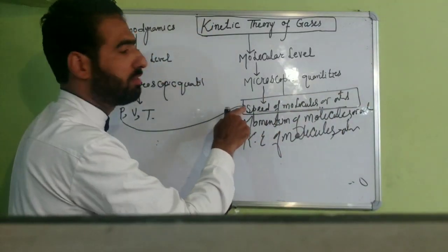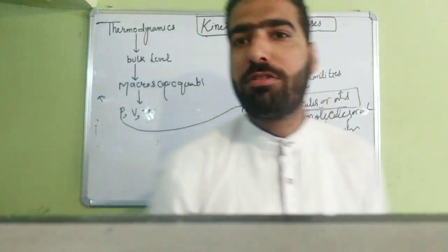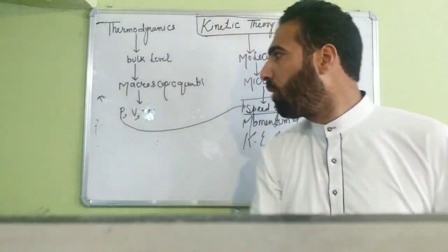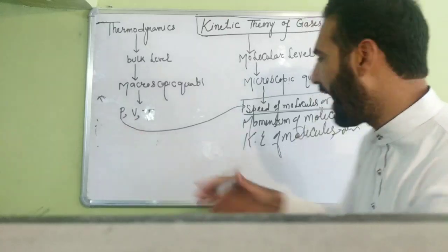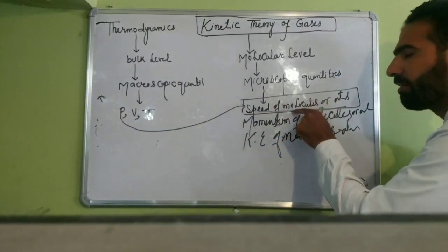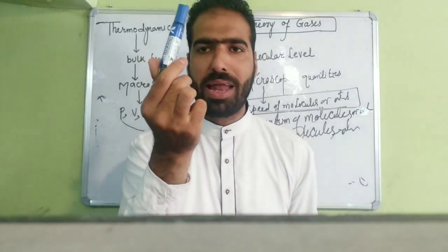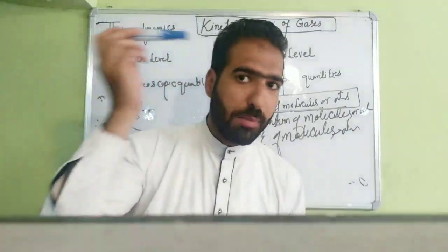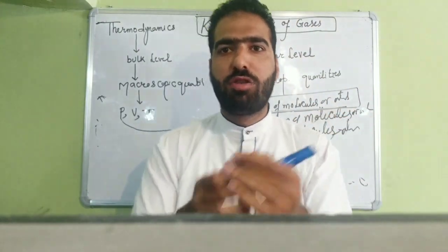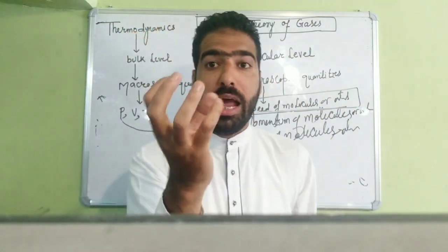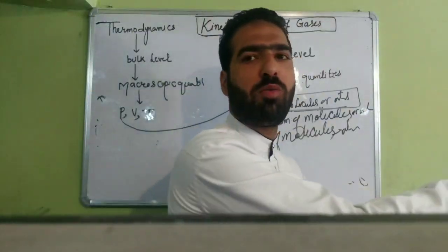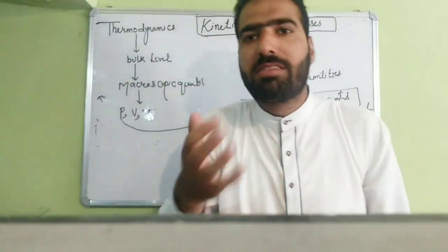What is the cause of the pressure exerted by the gas? It is due to the speed of the molecules, it is due to the momentum of the molecules. So what is the cause of pressure? It is due to the momentum of the molecules. A gas molecule possesses speed, it possesses mass. So when it hits the wall, it exerts pressure.